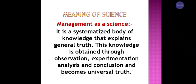Management as a science is a systematic process — knowledge that explains general truths or generates universal results. This knowledge is obtained through observation, experimentation, analysis, and conclusion, after which it becomes universal truth. This is called management as science.